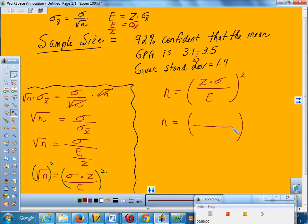I want to be 92% confident with my interval running from 3.1 to 3.5. So what's my margin of error? Well, if the mean is at 3.3, it must imply that my margin of error is only 2 tenths of a point, so I can fill in E as 0.2 on the bottom automatically.